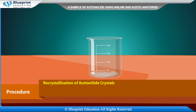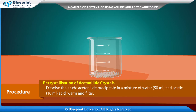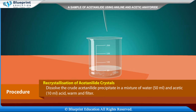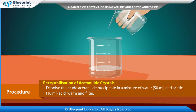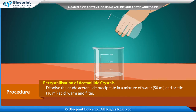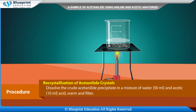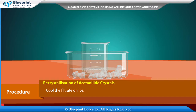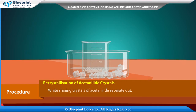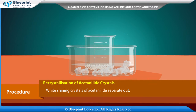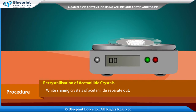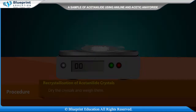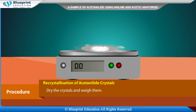Recrystallization of acetanilide crystals: Dissolve the crude acetanilide precipitate in a mixture of 50 ml water and 10 ml acetic acid. Warm and filter. Cool the filtrate on ice. White shining crystals of acetanilide separate out. Dry the crystals and weigh them.